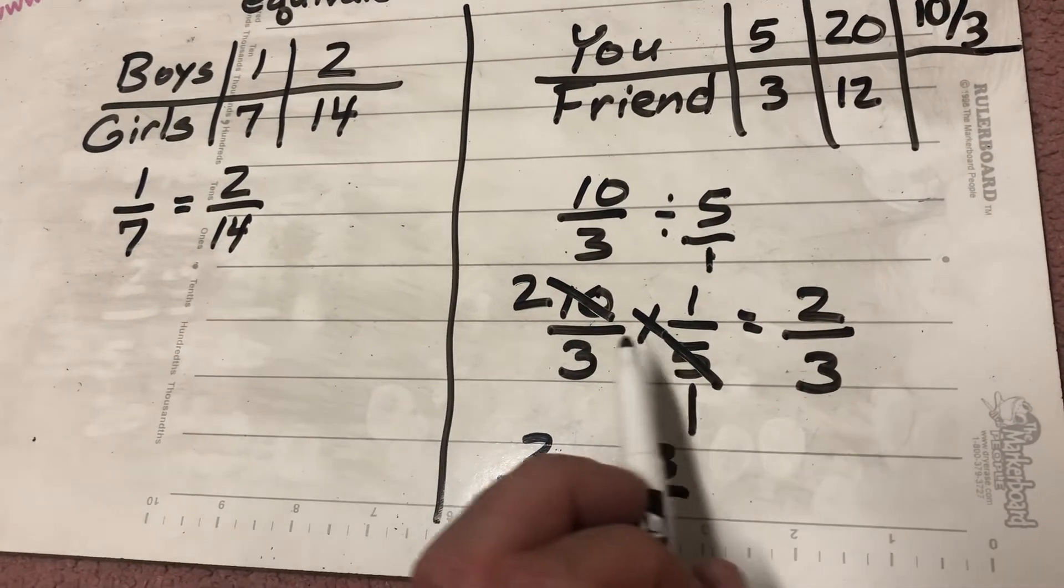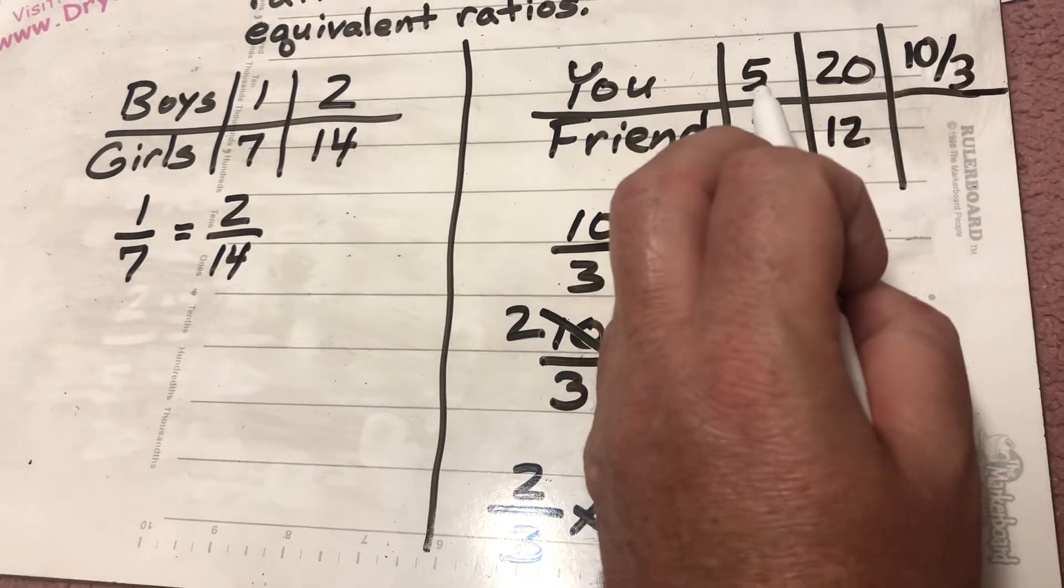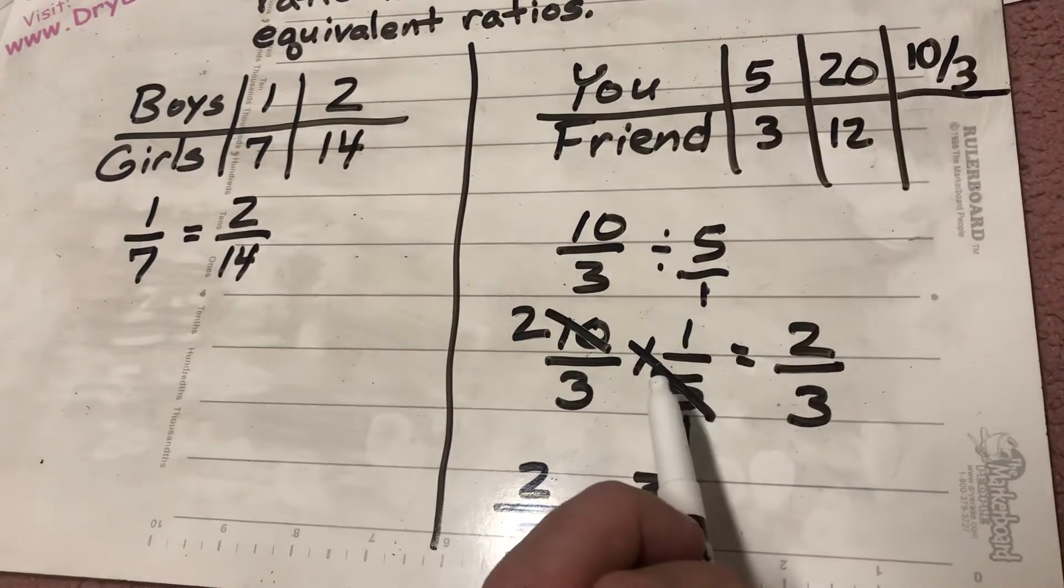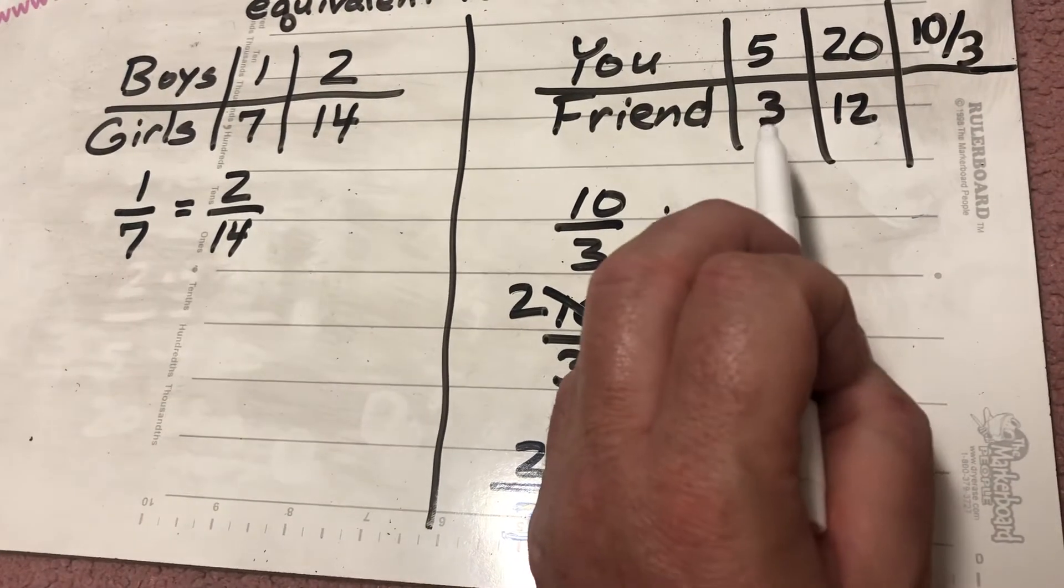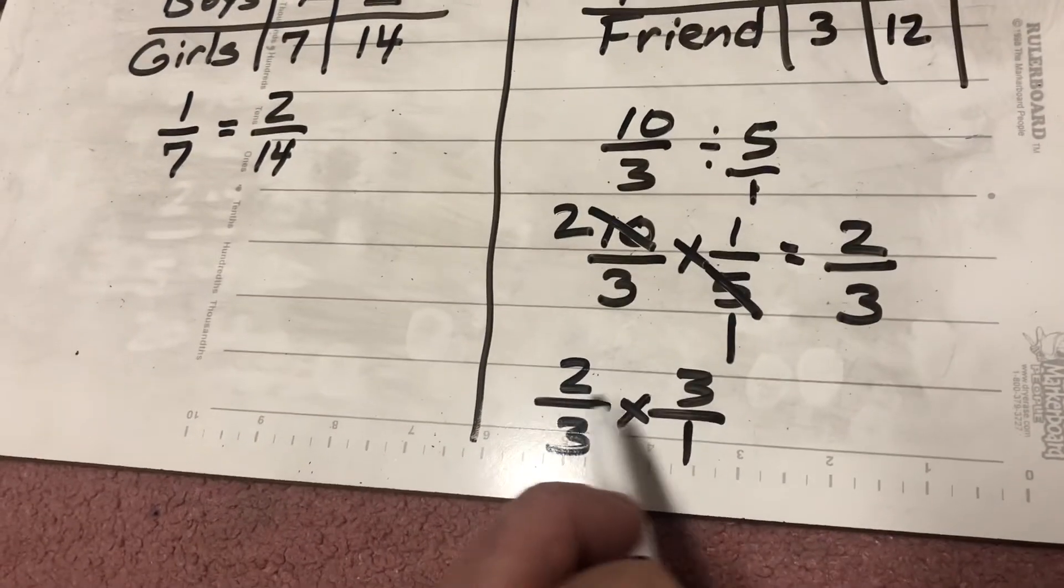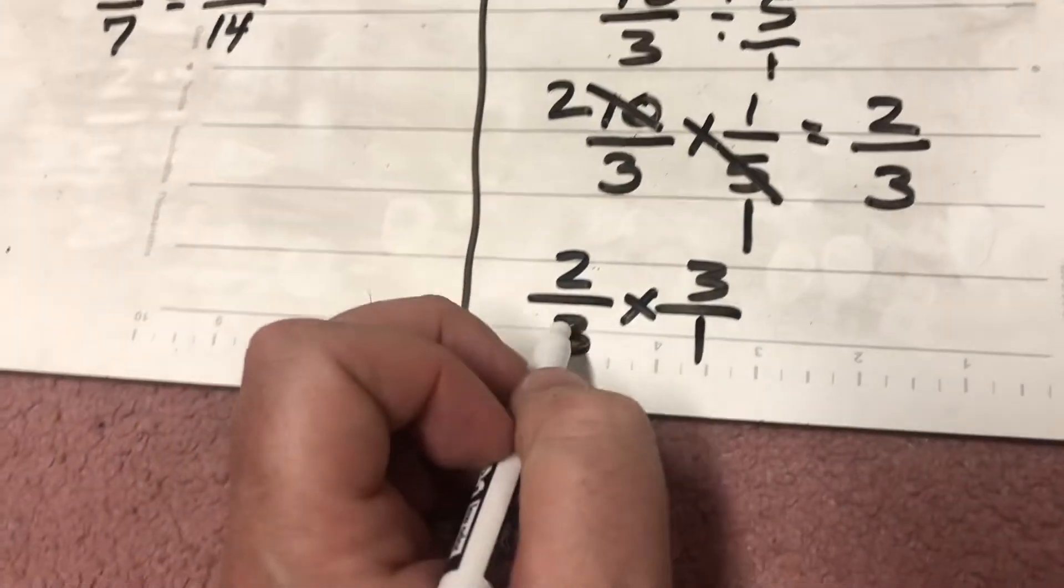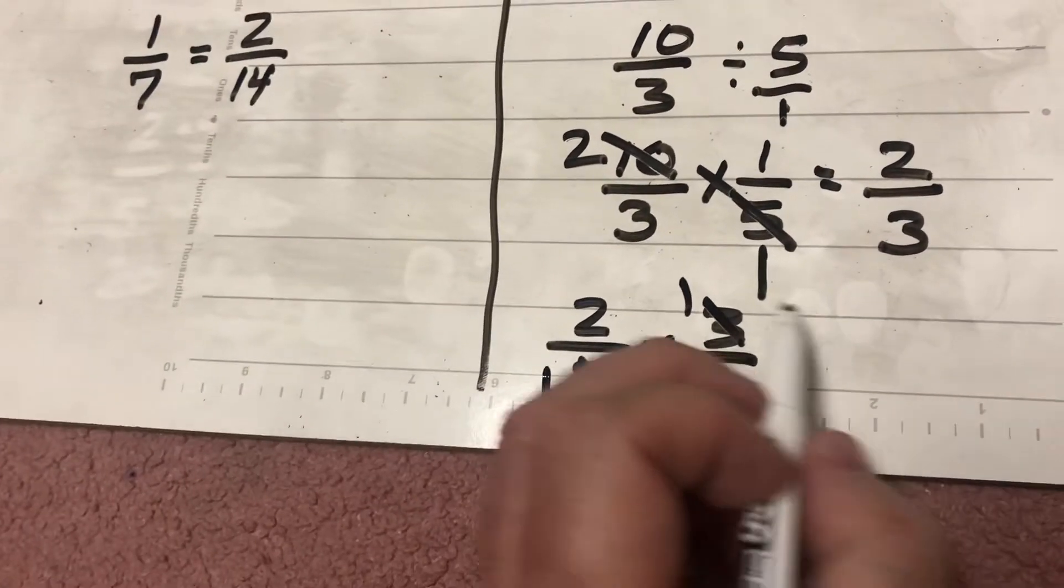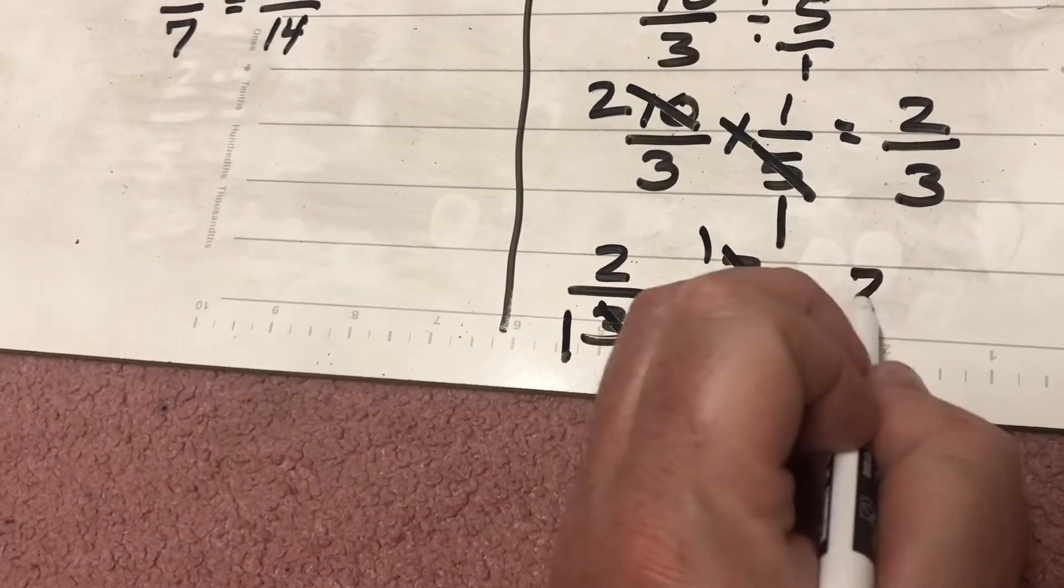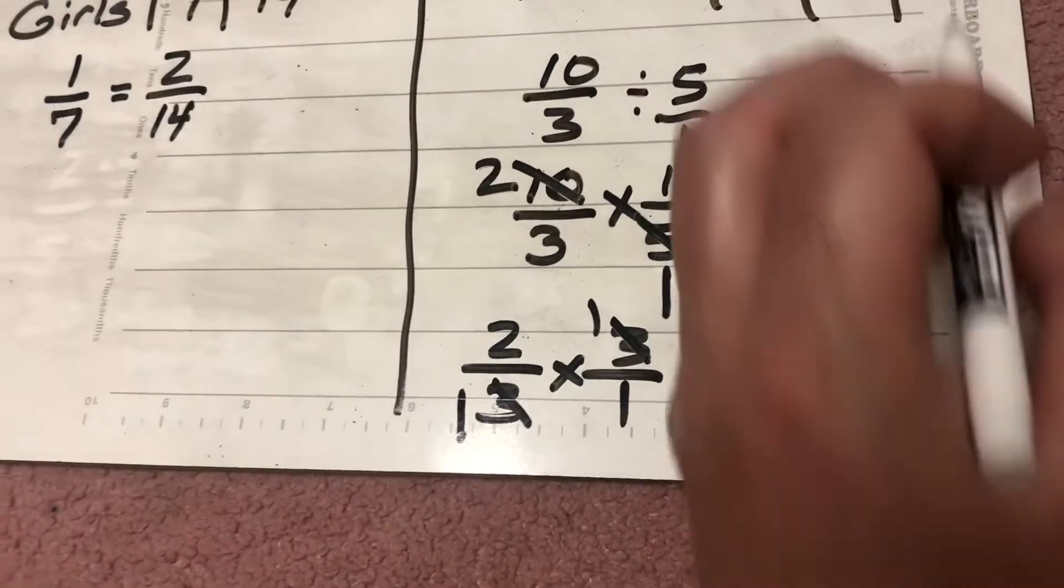Remember, I divided the 10 over 3, which is my 5 parts. I divided it to figure out what 1 part is. That's 2 thirds. I know my friend has 3 parts. So I'm taking 2 thirds times 3 over 1. I can cross-check, and the 3's will both become 1's. 2 times 1 is 2. 1 times 1 is 1. 2 over 1 equals 2.